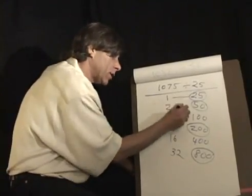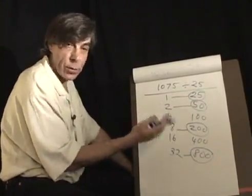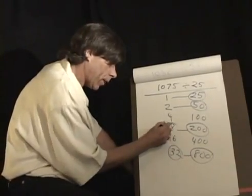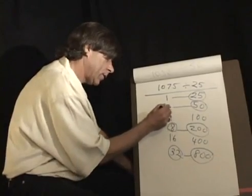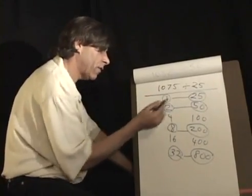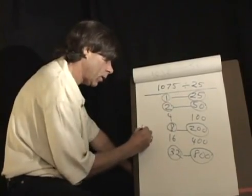And if I know that 1,075 is 800 plus 200, make 1,000, and 50, and 25. I just have to look across at the numbers that correspond there, or in a computer, there would be electrical circuits. And if I know that 32 plus 8 is 40, 42, 43. So 1,075 divided by 25 is 32 plus 8 plus 2 plus 1, which equals 43.